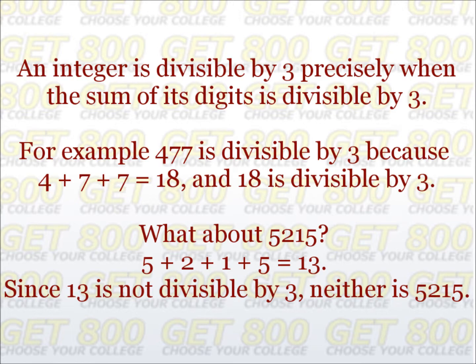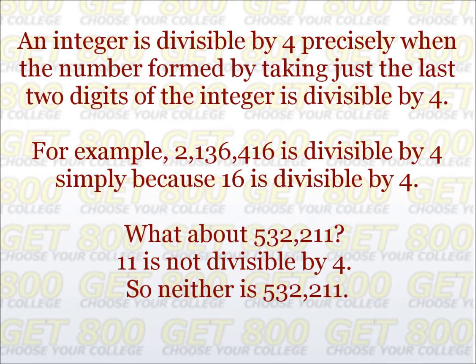Next, an integer is divisible by 4 precisely when the number formed by taking just the last two digits of the integer is divisible by 4. For example, the number 2,136,416 is divisible by 4 simply because the last two digits give us 16, and 16 is divisible by 4. How about the number 532,211? The number 11 is not divisible by 4, so neither is 532,211.